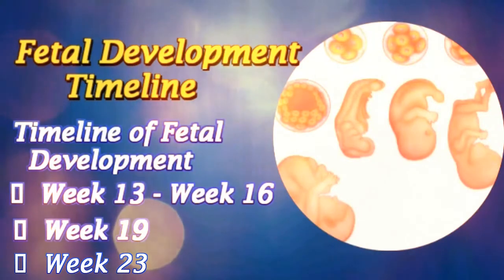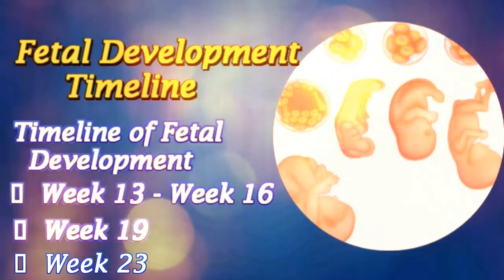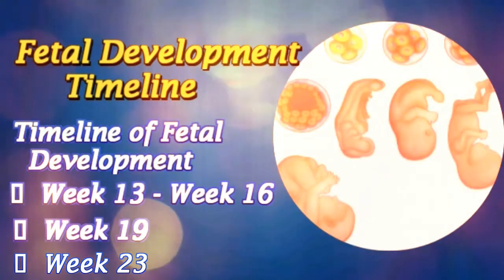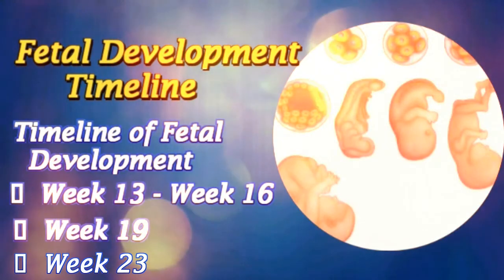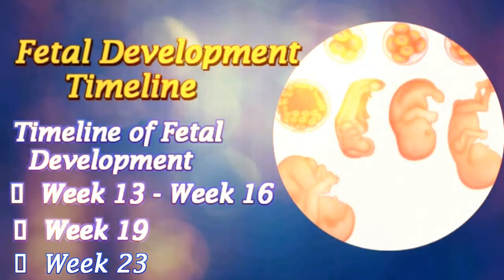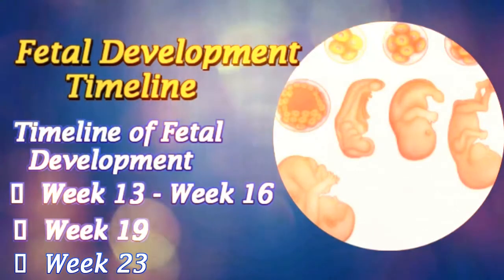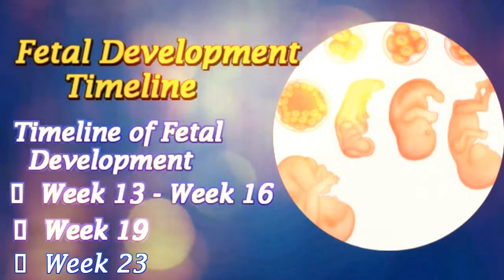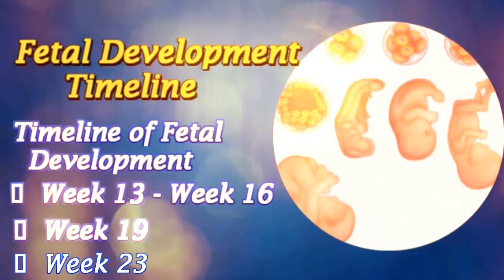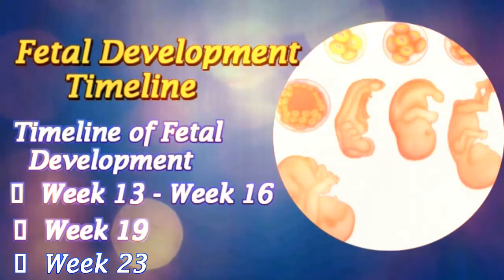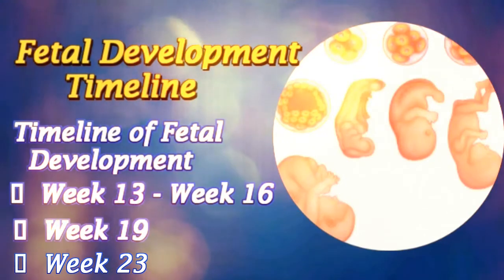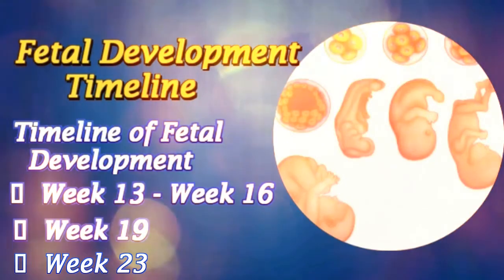Week 23: The fetus reaches a length of 28 cm. All the eye components are developed. The heart, liver, and spleen are already functioning at this stage. The fetus has a hand and startle reflex at this stage. Alveoli are forming in the lungs.